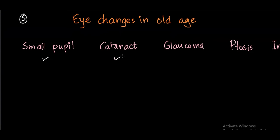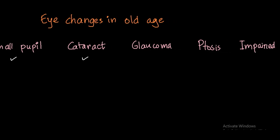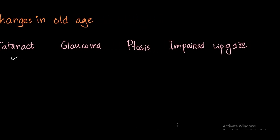The lens becomes opacified, blurring the vision, so cataract is ubiquitous but only needs treatment when it's symptomatic. There is also an increased risk of acute congestive glaucoma because the lens becomes bigger and compresses the anterior chamber.